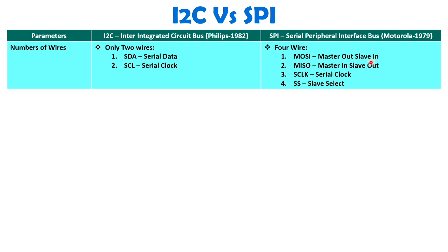With SPI, MOSI is the master out slave in line, and MISO is the master in slave out line. MOSI is used to send data to the slave, and MISO is used to receive data from the slave. SCL is the serial clock line given by master, and slave select is also given by master. So with SPI, four lines are needed for just two devices, and as you increase the number of slaves, slave select lines will increase. In terms of number of wires, I2C is way better compared to SPI.